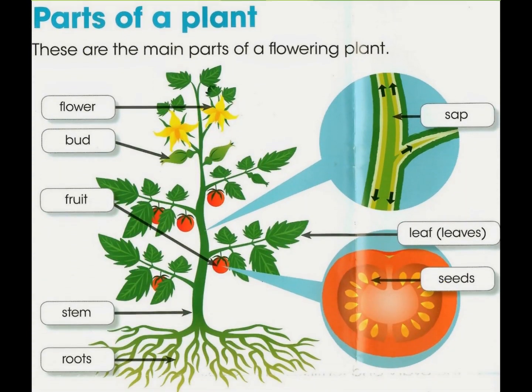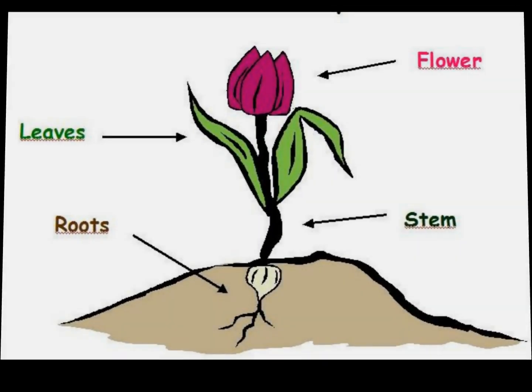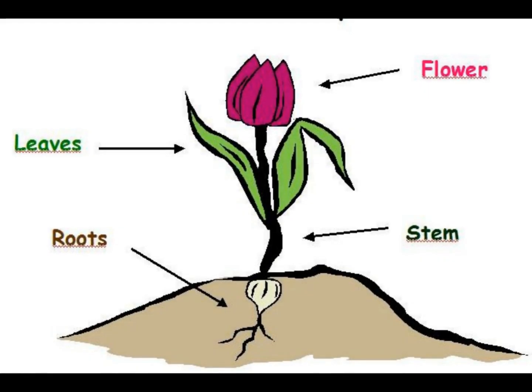Parts of a plant. A plant is made up of three main parts: the roots, the leaves and the stem.